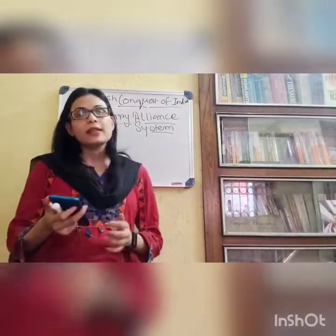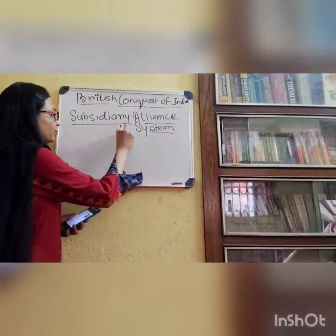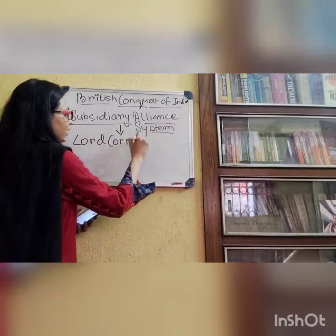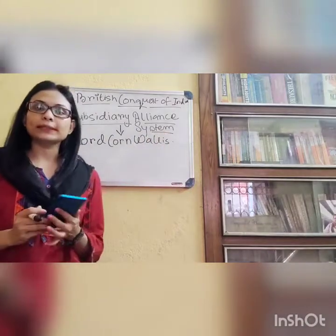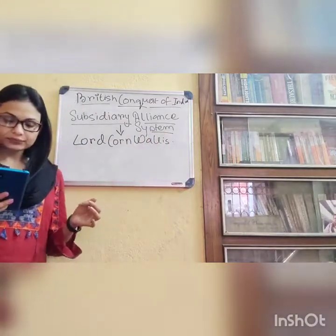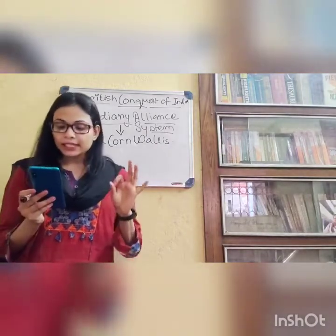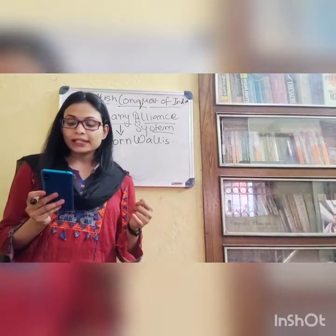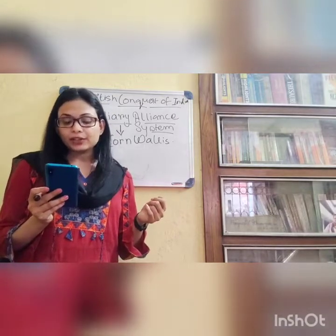Now, what is the Subsidiary Alliance System? Lord Wellesley introduced the Subsidiary Alliance System. It was introduced by Lord Cornwallis, who was the Governor General in 1786. Under this system, any Indian ruler whose security was threatened could seek help from and enter into an alliance with the British. The British would protect the ruler from any kind of attack.